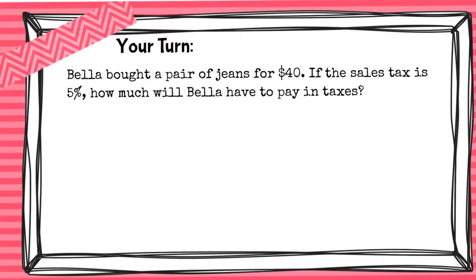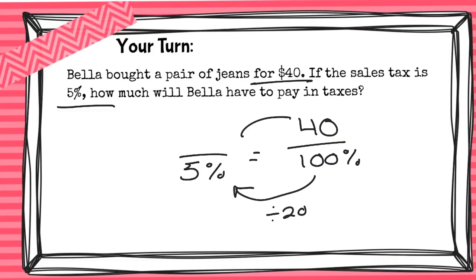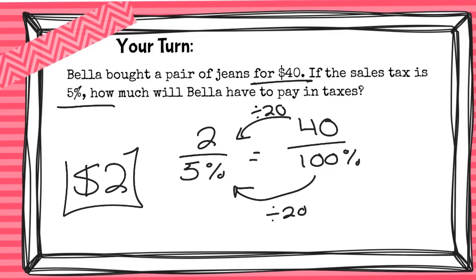Now it's your turn. Bella bought a pair of jeans for $40. The sales tax is 5 percent. How much will Bella have to pay in taxes? Let's check our answer: $40 represents 100 percent, and we are finding 5 percent. We know that is dividing by 20, so we also divide the 40 by 20, which is 2. Bella has to pay $2 in taxes.